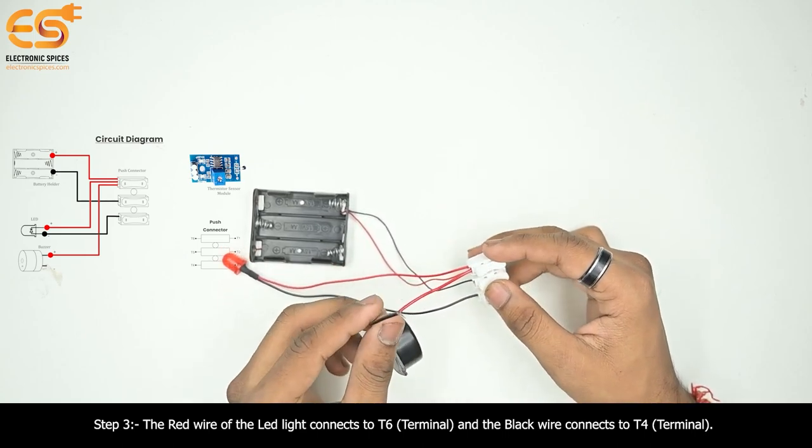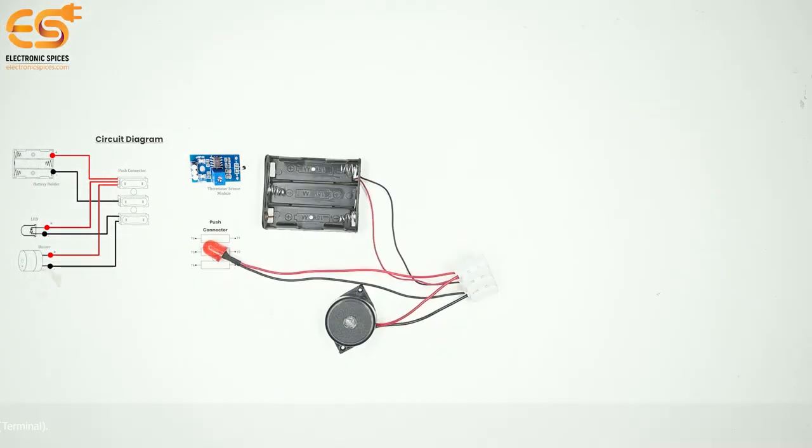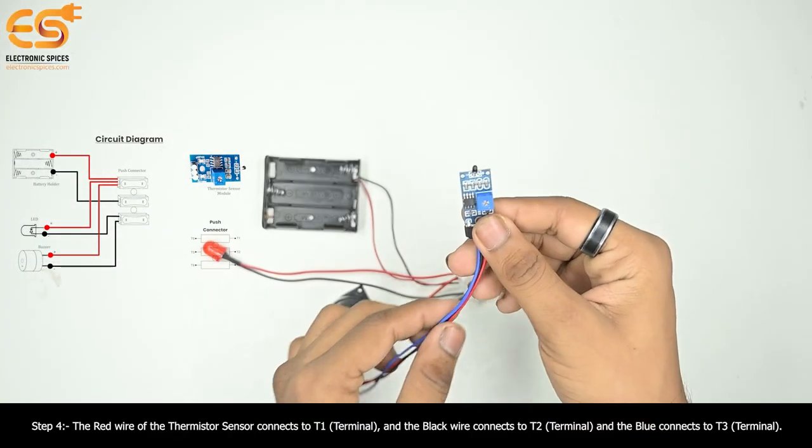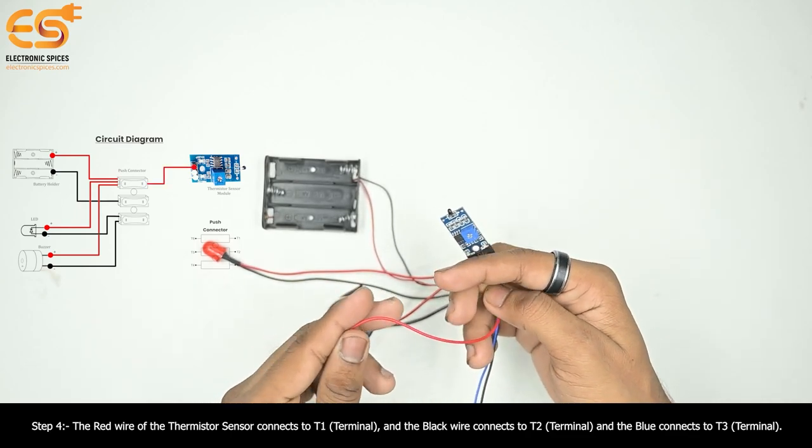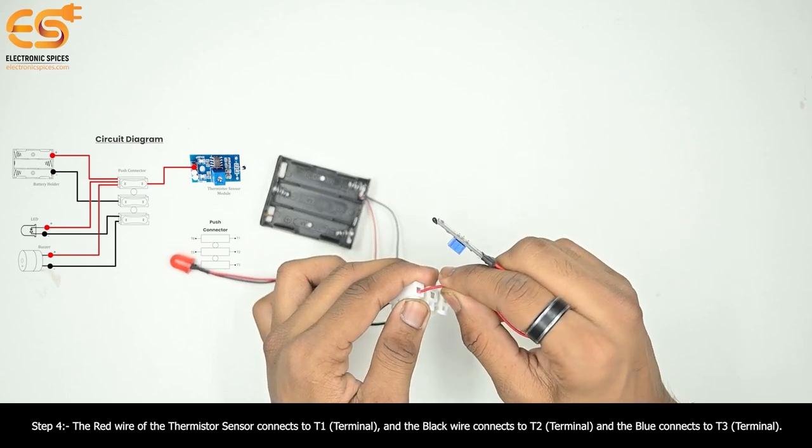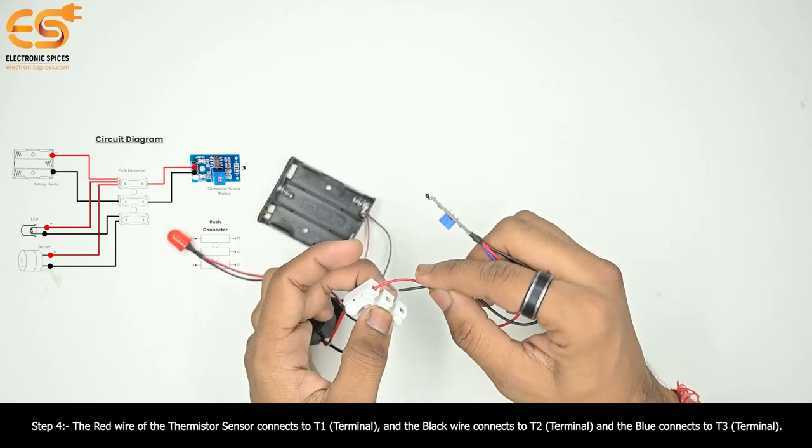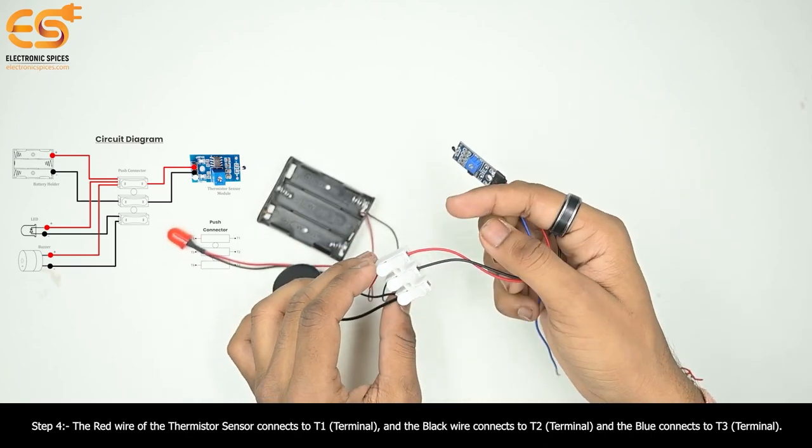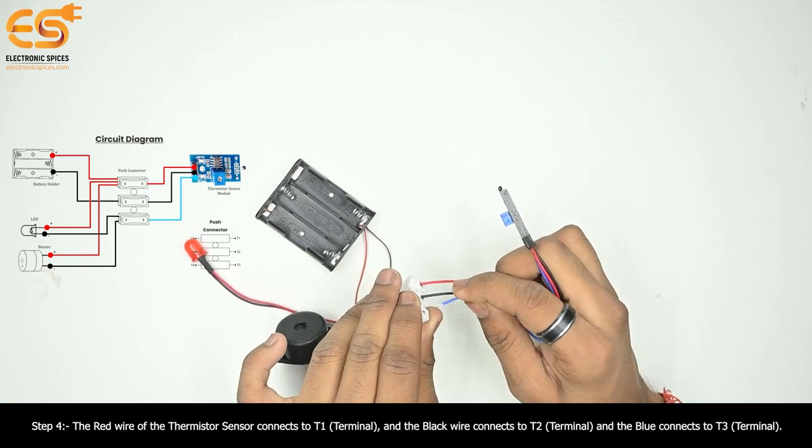Step four: thermistor sensor module. The red wire of the thermistor sensor connects to T1 terminal, the black wire connects to T2 terminal, and the blue wire connects to T3 terminal.